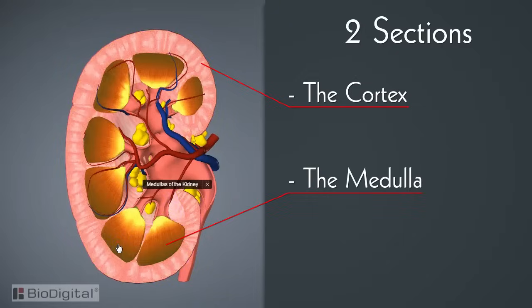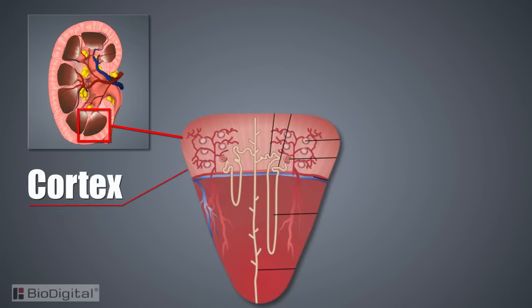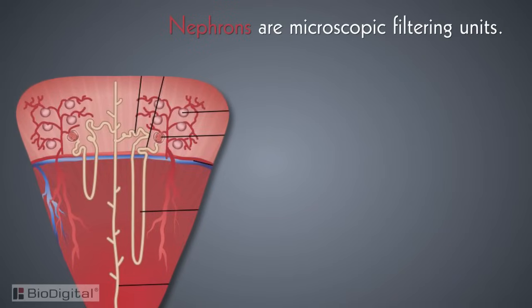For this reason, kidney punching in boxing is illegal. Each kidney is divided into two main sections: the cortex and the medulla. The cortex is the outer section of the kidney and contains the majority of nephrons — microscopic filtering units.